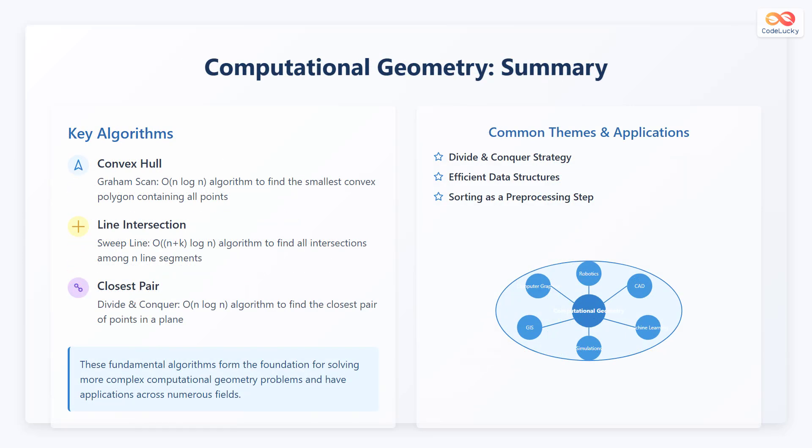In summary, we've covered several key algorithms in computational geometry. The first algorithm is the convex hull using the Graham scan, an algorithm with O(N log N) to find the smallest convex polygon containing all the points. The second algorithm is line intersection using the sweep line algorithm with O(N + K log N) to find all intersections among N line segments.